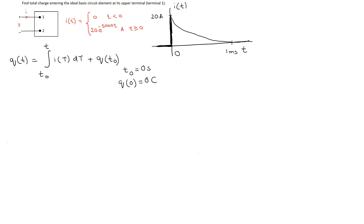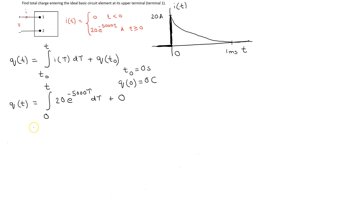Now we can substitute the values and find an expression for the charge. The lower limit is t0=0 and we keep the upper limit as t. Substituting the value of the current, we get the integral of 20e^(-5000τ) dτ, with q(0)=0. We can move the constant 20 outside the integration.